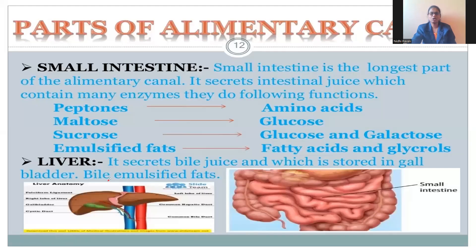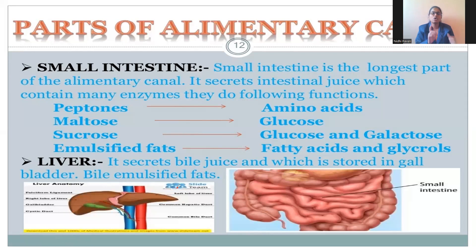The next part of the alimentary canal is the small intestine, where complete digestion of food occurs. It is a highly coiled part of the digestive system. It secretes a juice called intestinal juice, which contains certain enzymes that act on carbohydrates, proteins, and fats. The small intestine also has close connections with the liver and pancreas.